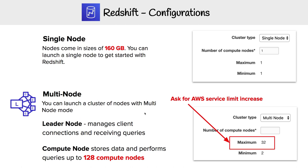When you spin up Redshift in multi-node, you'll see there's a maximum set to 32 by default, even though the actual maximum is 128. This is just AWS wanting to be sure you want more than 32, so that users don't accidentally incur large costs on day one. If you need more than 32 nodes, you just have to request a service limit increase from AWS.